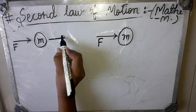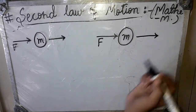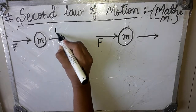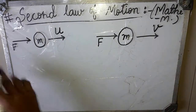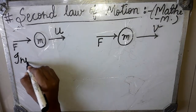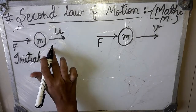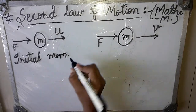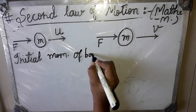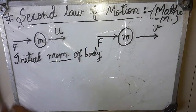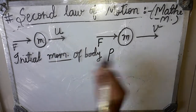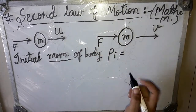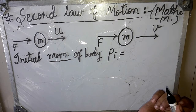We apply a force F on the body. The initial velocity is represented as u. We define the initial momentum of the body. As shown in the previous video, the initial momentum pi equals mass of the body multiplied by its initial velocity u.